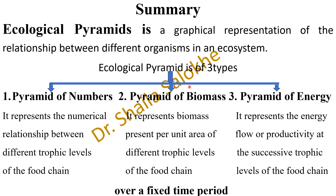To summarize ecological pyramids: an ecological pyramid is a graphical representation of the relationship between different organisms in an ecosystem, and they are of three types — pyramid of numbers, pyramid of biomass, and pyramid of energy. The pyramid of numbers represents the numerical relationship between different trophic levels of the food chain. The pyramid of biomass represents biomass present per unit area of different trophic levels. The pyramid of energy represents flow or productivity of energy at successive trophic levels of the food chain, all over a fixed time period.